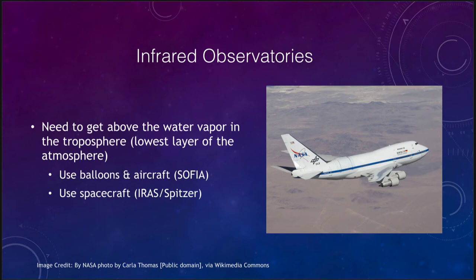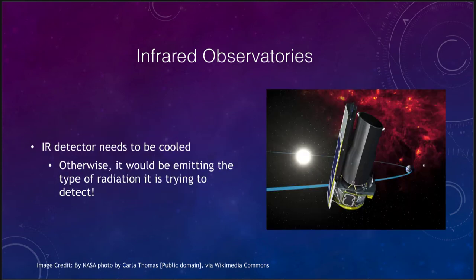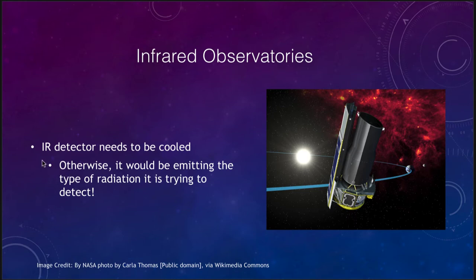Even better, you can get out into space entirely. We can put telescopes out in space to observe infrared, and of course they have the advantage of being above the atmosphere with absolutely no water vapor to worry about. The difficulty with these is that the infrared detector needs to be cooled — it has to be very cold. Otherwise, if you remember black body radiation, something at room temperature is giving off infrared radiation.